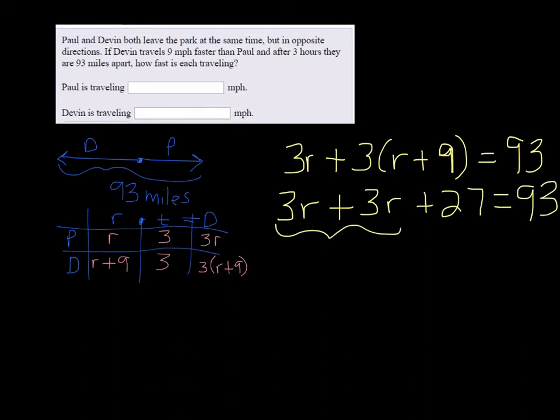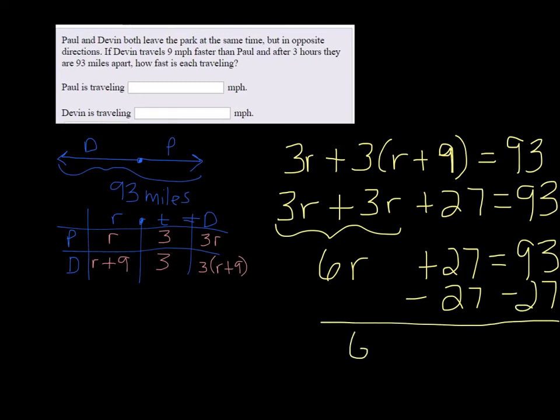Combining like terms, 3R and 3R gives me 6R plus 27 equals 93. You need to subtract off the 27 on both sides. That leaves me with 6R equal to 66.